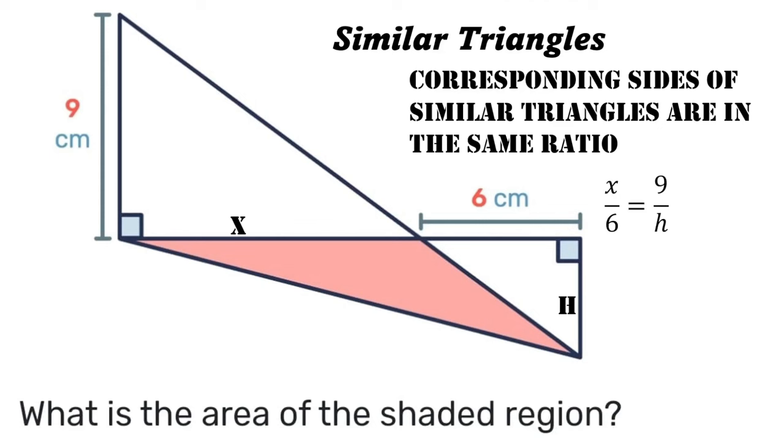Cross multiplying, we'll get that x times h is equal to 9 times 6, or in other words, xh is equal to 54.